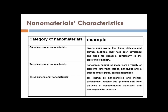There are various categories of nanomaterials: one-dimension, two-dimension, and three-dimension. One-dimensional nanomaterials like layers, multilayers, thin films, and surface coatings have been developed and used for decades, particularly in the electronics industry. Two-dimensional nanomaterials include nanowires, nanofibers made from a variety of elements other than carbon, nanotubes, and carbon nanotubes. Three-dimensional nanomaterials are known as nanoparticles and include precipitates, colloids, quantum dots — tiny particles of semiconductor materials — and nanocrystalline materials.